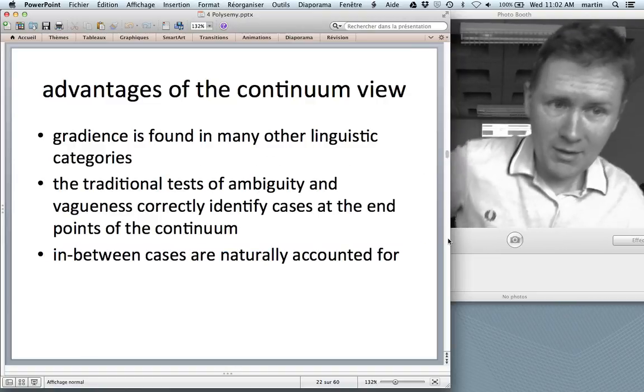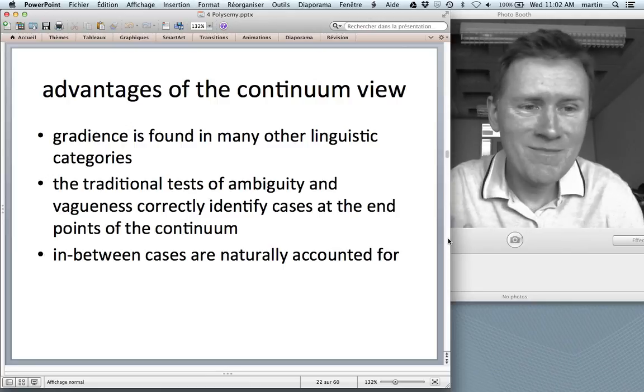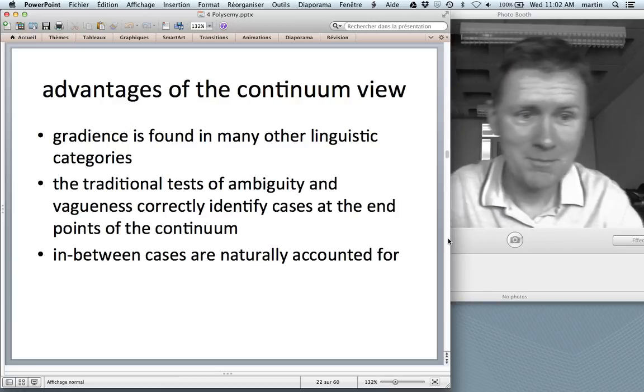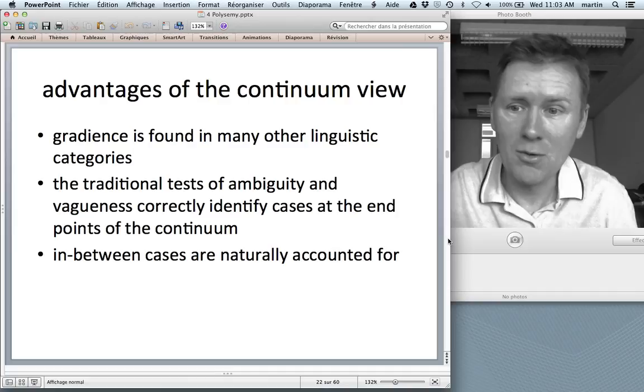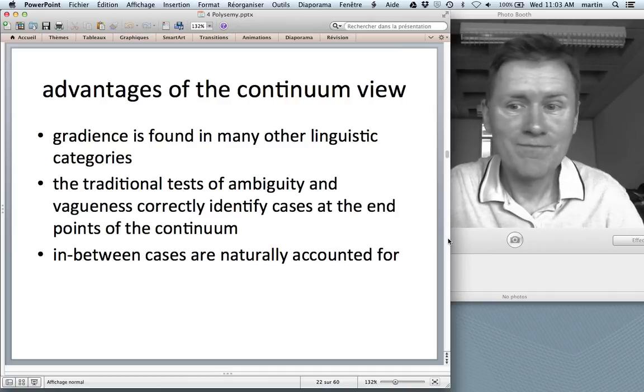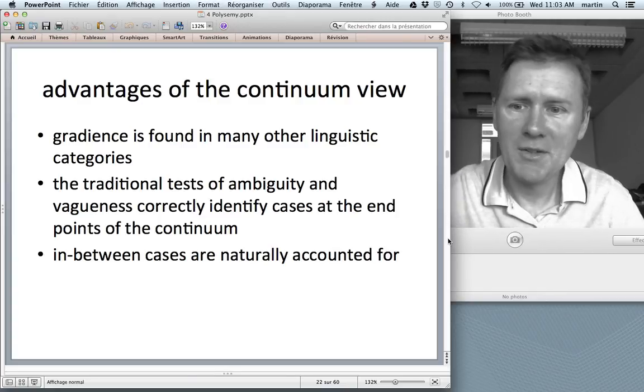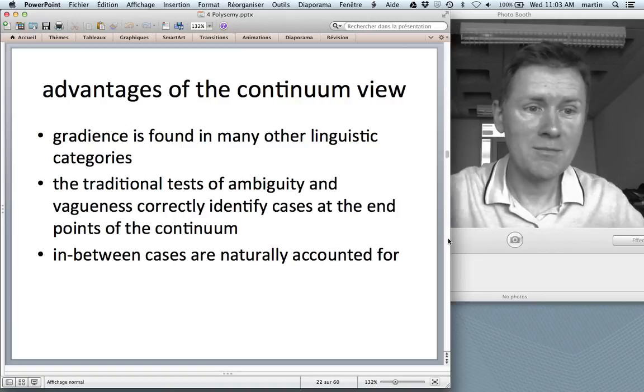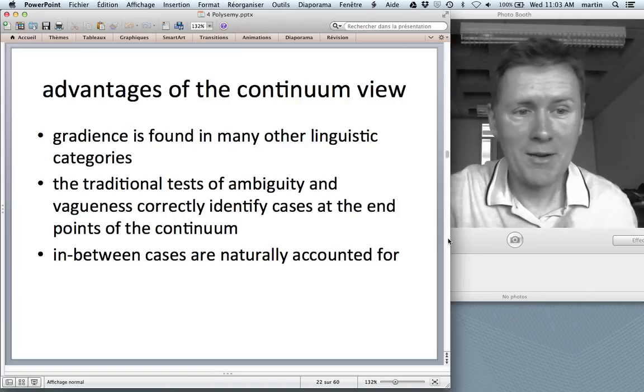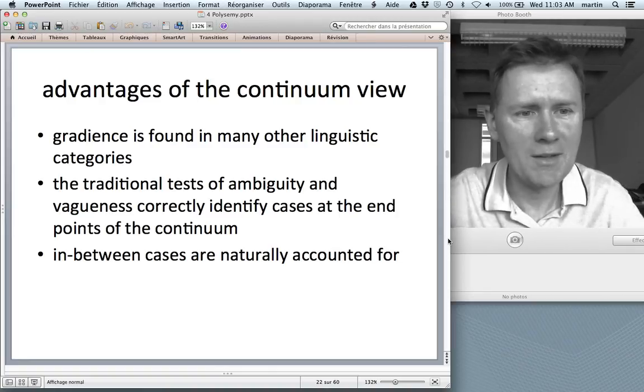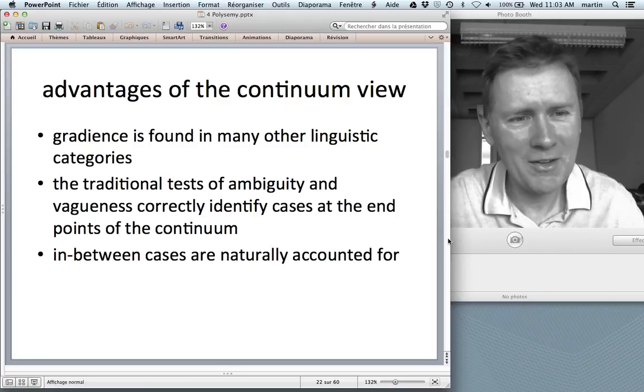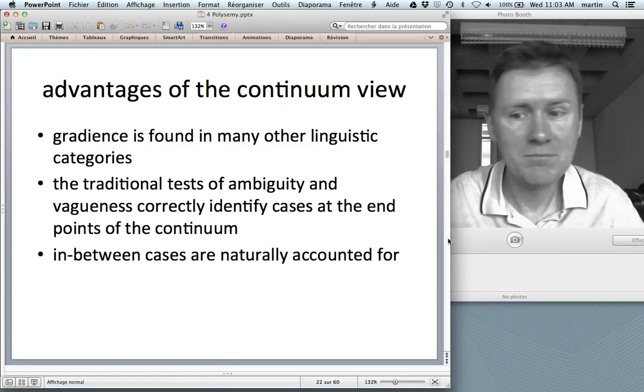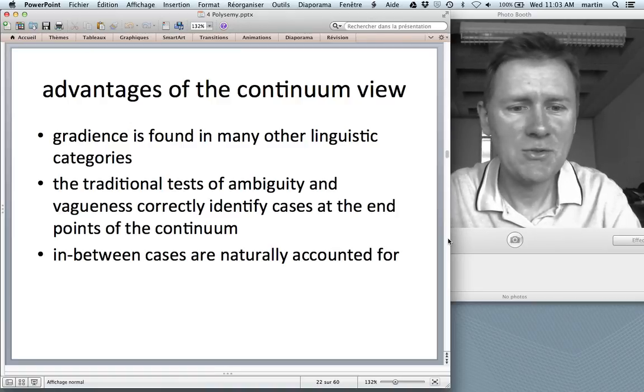There are several advantages of the continuum view, namely gradients. So non-discreteness and then distinctions is found in many other linguistic categories. We talked about categories. Here's the link. Categories are organized in a prototypical way so that you have central and peripheral members. And so why not assume the same for polysemy and ambiguity? The traditional tests of ambiguity and vagueness correctly identify cases at the end points of the continuum. So we don't have to put these tests, file these tests away or forget about them. Rather, they're pretty useful to identify extreme cases. But nonetheless, they are less useful at the boundaries in the middle of the continuum. And those are the cases that are really of most interest to us. So the advantage of the continuum view is that in-between cases are naturally accounted for.